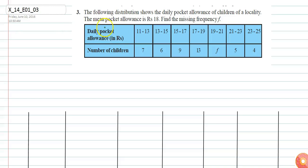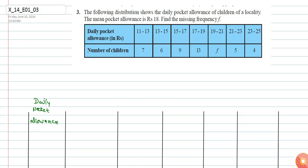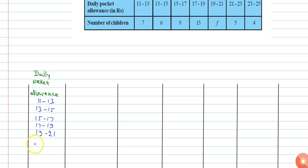We shall solve this question by using the step deviation method. This column is for daily pocket allowance, which is given in the form of intervals: 11 to 13, 13 to 15, 15 to 17, 17 to 19, 19 to 21, 21 to 23, and 23 to 25.